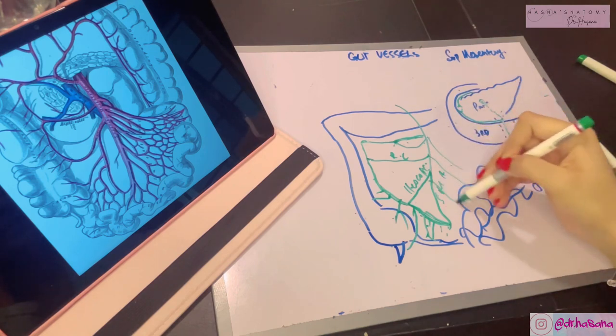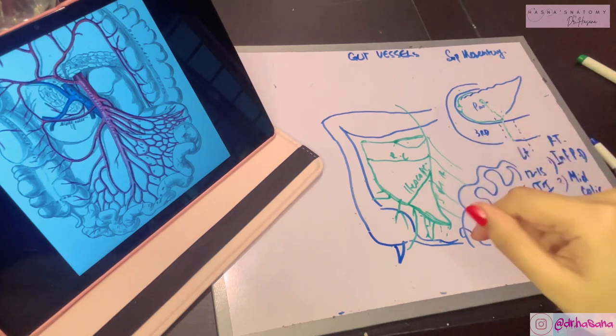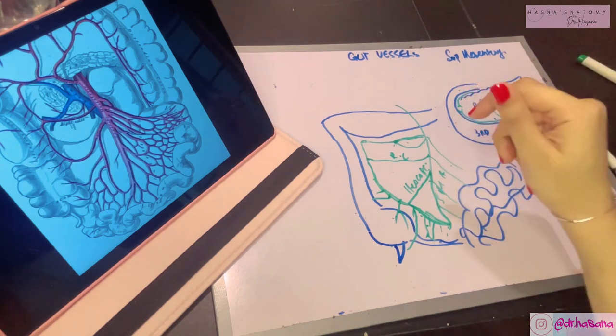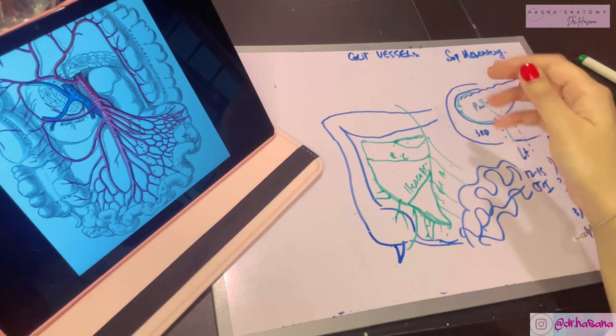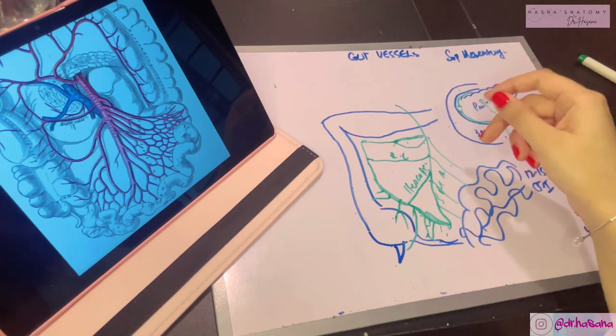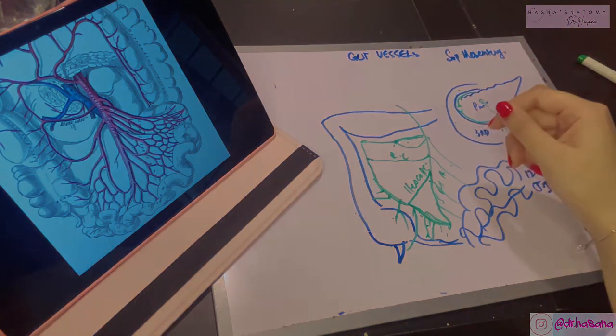That is how the superior mesenteric artery supplies your entire midgut. I really hope you understood that blood supply. In the next video we'll talk about the inferior mesenteric artery, so keep watching. Thank you so much for watching.